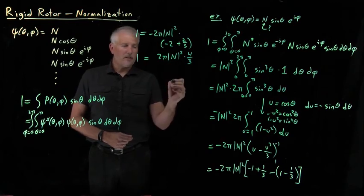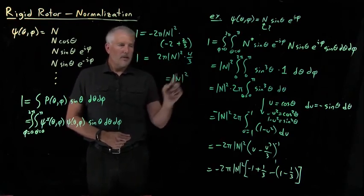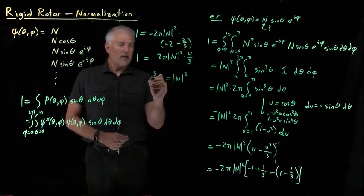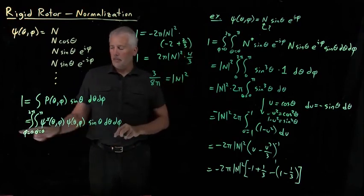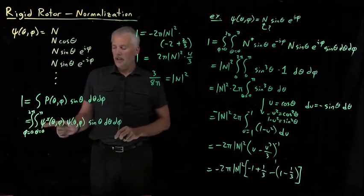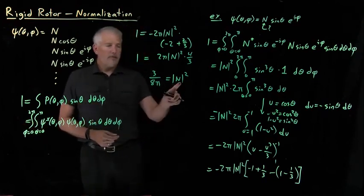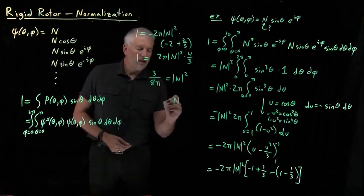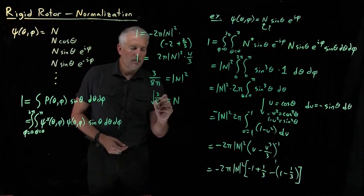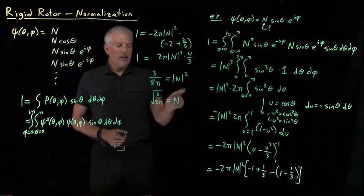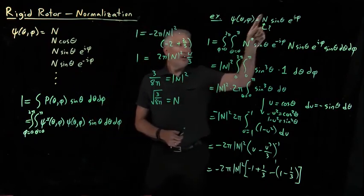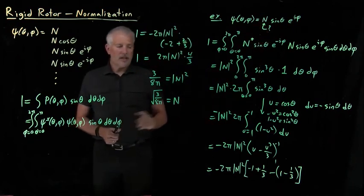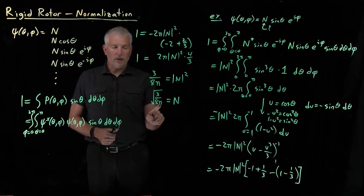My goal is to solve for n. Moving everything else to the left-hand side, n-squared equals 3 over 8 pi, so n equals the square root of 3 over 8 pi. The reason we kept the magnitude notation was because we didn't know if n would be real or complex. It turns out we can get by with n being a real number — the square root of 3 over 8 pi — and when we square it, we get 3 over 8 pi, which is what we were looking for.